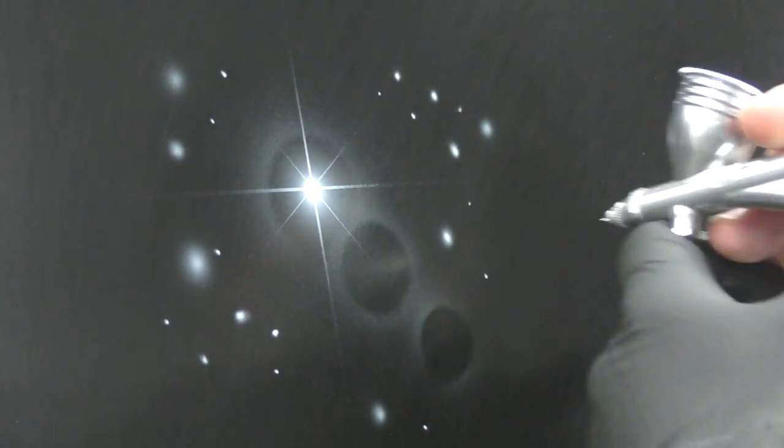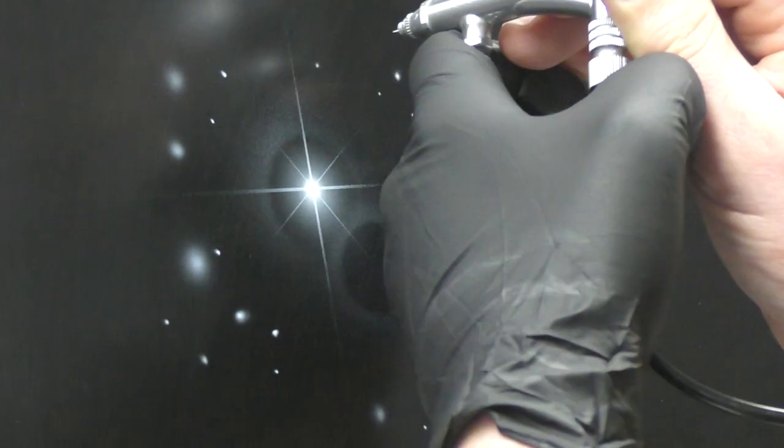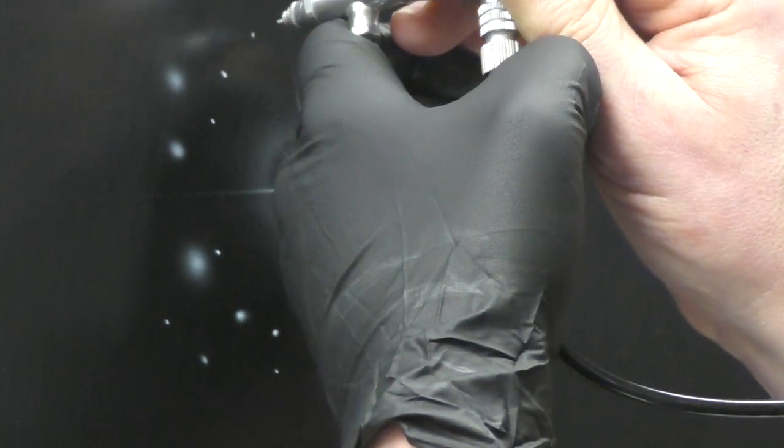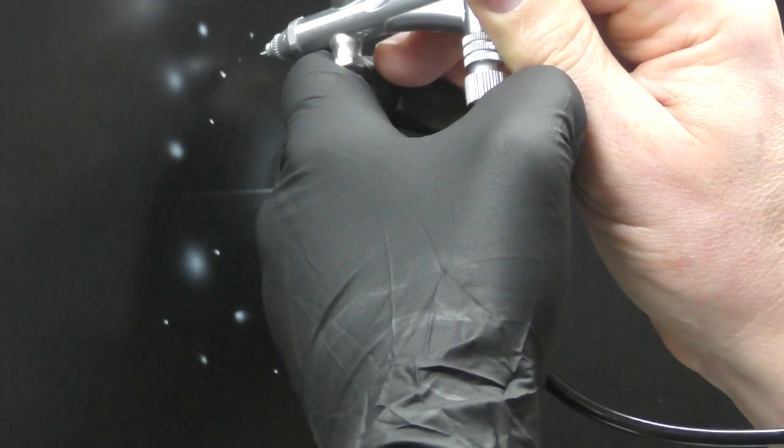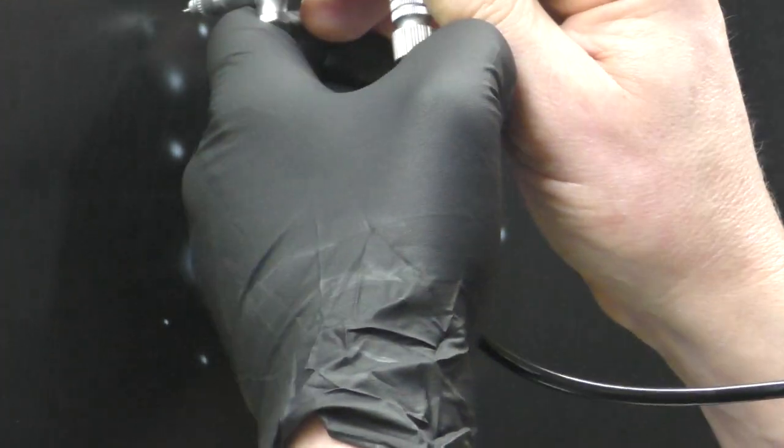So again, just varying those, building up a nice array of stars around that starburst, and you can obviously play around with this, add more stars and starburst as you like.